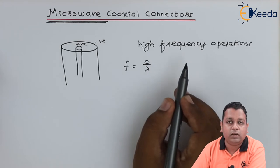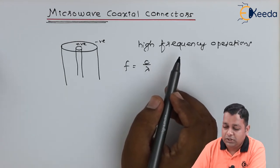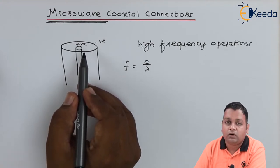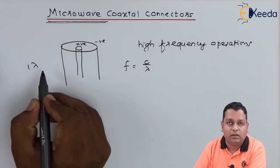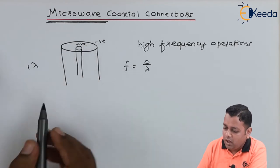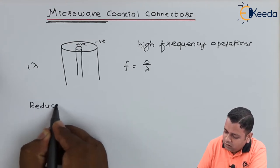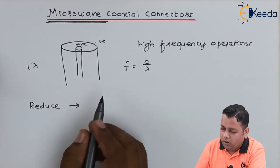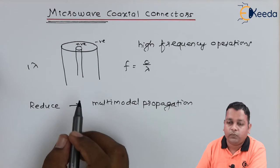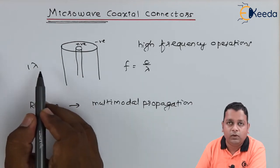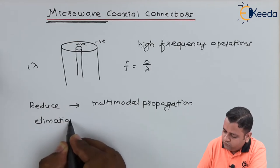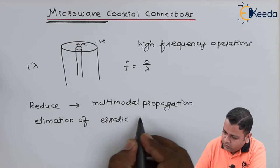One very important point to consider is that the average circumference — the average periphery — of the coaxial cable must be limited to one wavelength, denoted by lambda. The purpose of this dimensional limitation is to reduce the effect of multimodal propagation and also to make the elimination of erratic reflection coefficients.